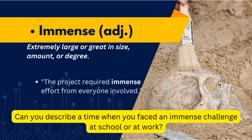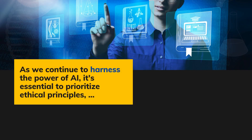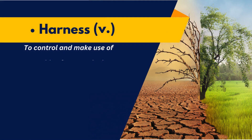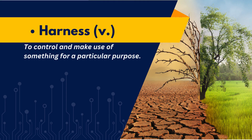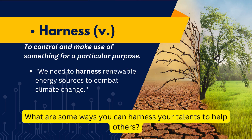Don't be shy — leave a comment with your answer, or comment on other viewers' responses. Let's be supportive and help each other practice new vocabulary. As we continue to harness the power of AI, it's essential to prioritize ethical principles. To harness something means to control and make use of it for a particular purpose. We need to harness renewable energy sources to combat climate change. What are some ways you can harness your talents to help others?